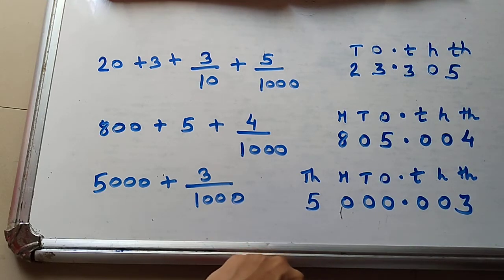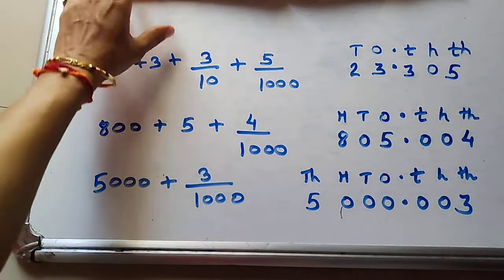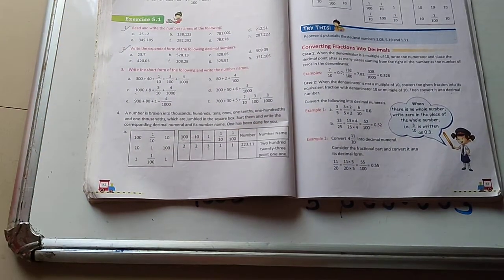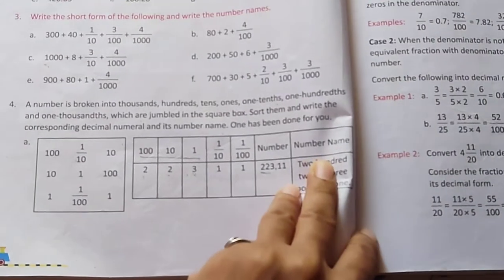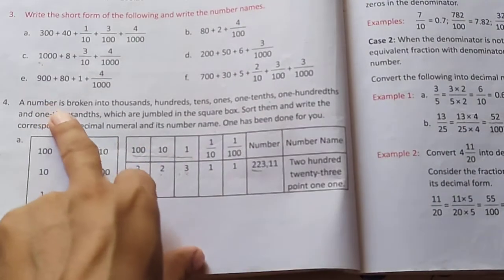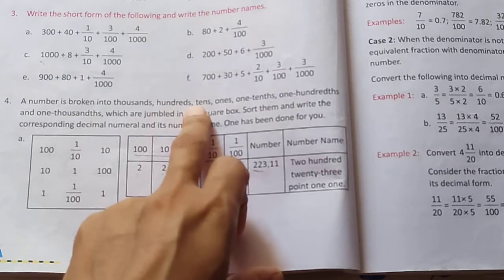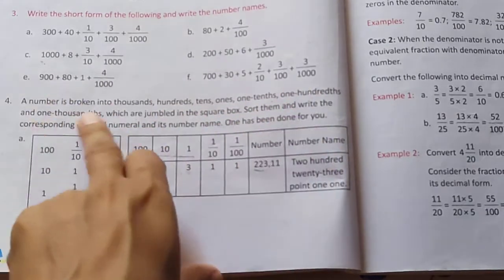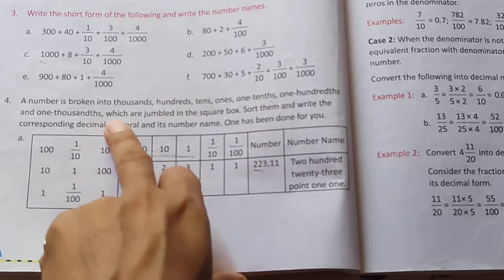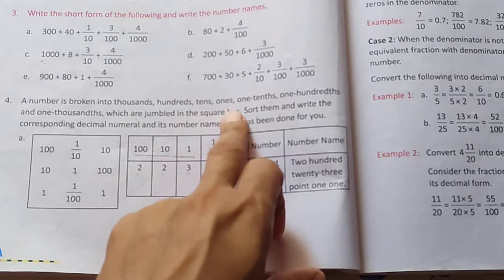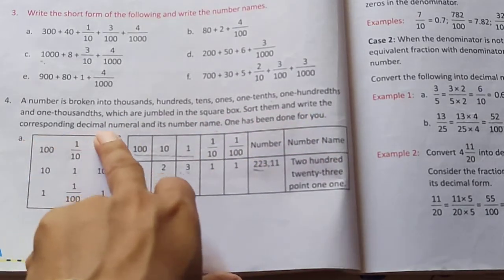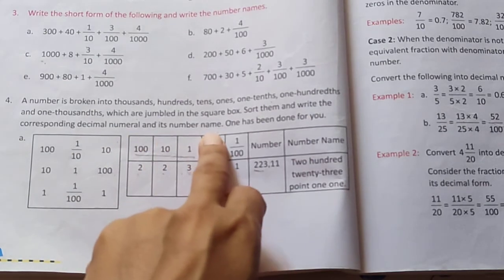In this way, complete question number 3 in your notebook. Now see question number 4. A number is broken into places: thousands, hundreds, tens, ones, tenths, hundredths, and thousandths, which are jumbled in a square box. Sort them and write the corresponding decimal number and its number name.